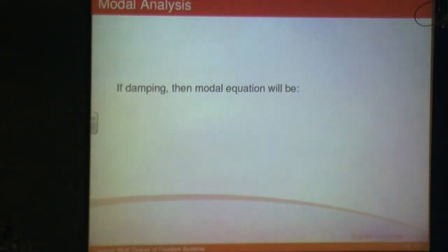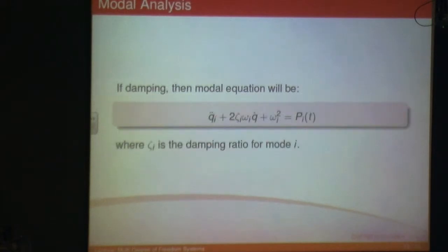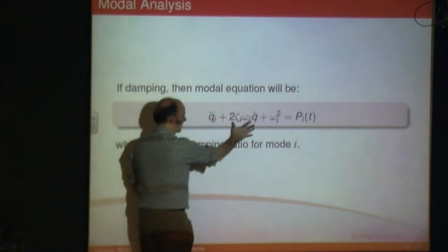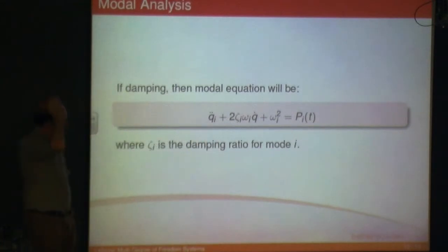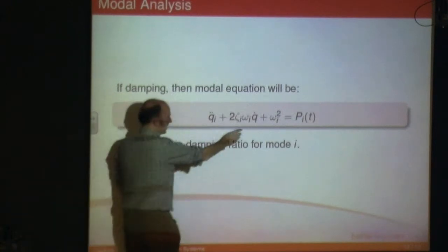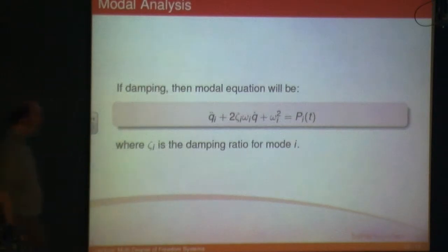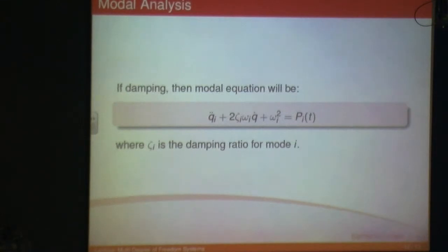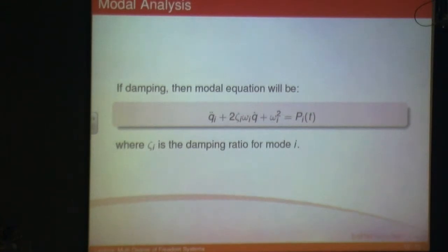If you've got damping in your system, the equation is slightly different — your modal equation will have an additional term in the middle. Assuming your damping is proportional to a linear combination of your mass and stiffness — proportional damping — you'll have this term in the middle, and ζ is simply the damping ratio for that mode. If you do have a damping problem, question six in your notes does involve damping, and the damping ratio is given to you in the solution.